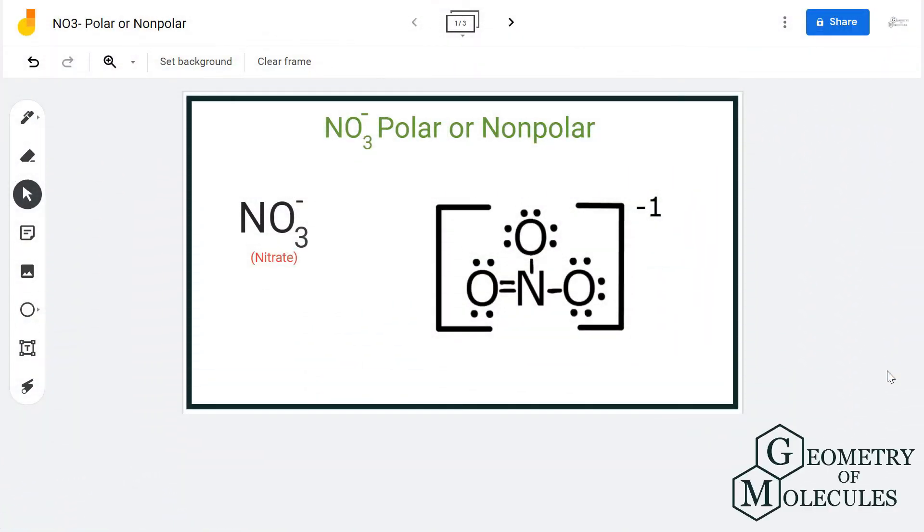Hi guys, today in this video we are going to look at the NO3 ion and find out its polarity. So NO3 ion is also known as nitrate anion, and to determine its polarity we will first look at its Lewis structure followed by its 3D structure to know the polarity of this molecule.